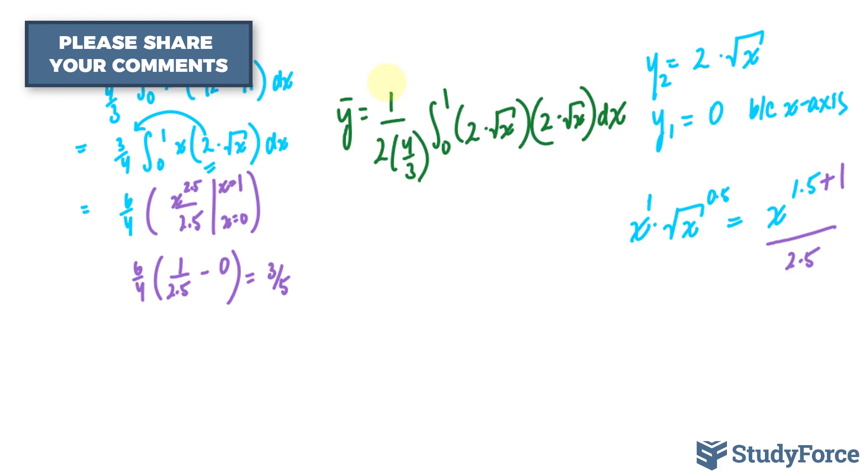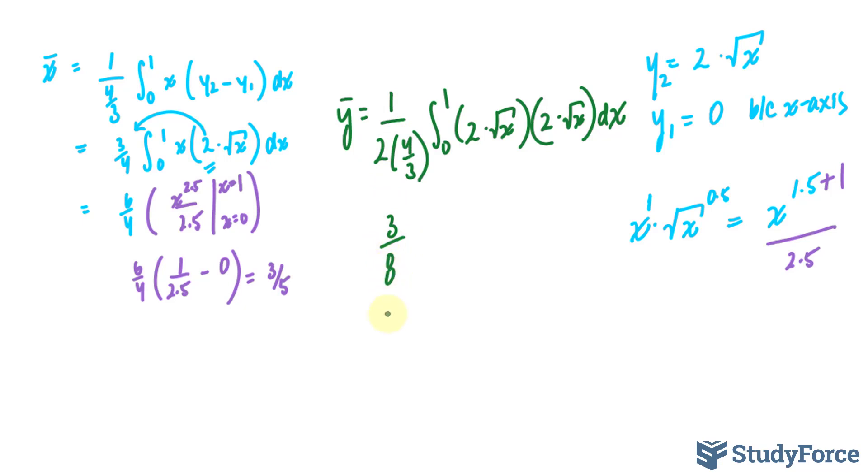So let's see what happens. This cleans up into 1 over 8 over 3, or in other words, 3 over 8, times the integral between 0 and 1. 2 times 2 is 4. Pull that out. The square root of x times the square root of x is simply x dx. Easy now. Now, this becomes x to the power of 2 over 2, when x is equal to 1 and x is equal to 0.